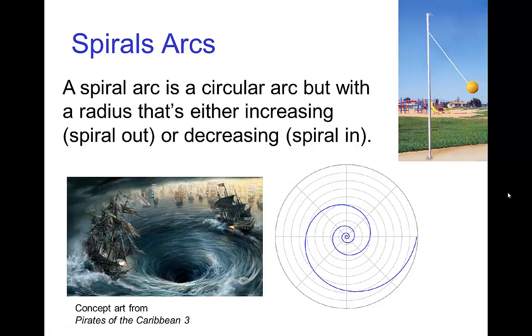A much less common type of path of action is a spiral arc. A spiral arc would be basically a circular arc, but with a radius that's changing as the object spirals in or spirals out.